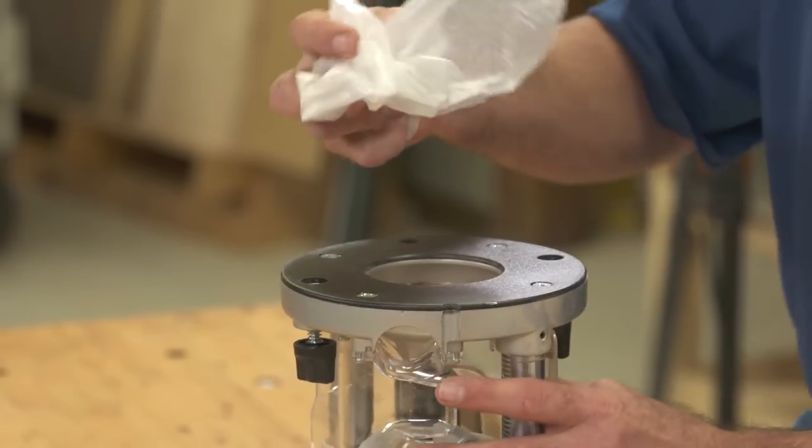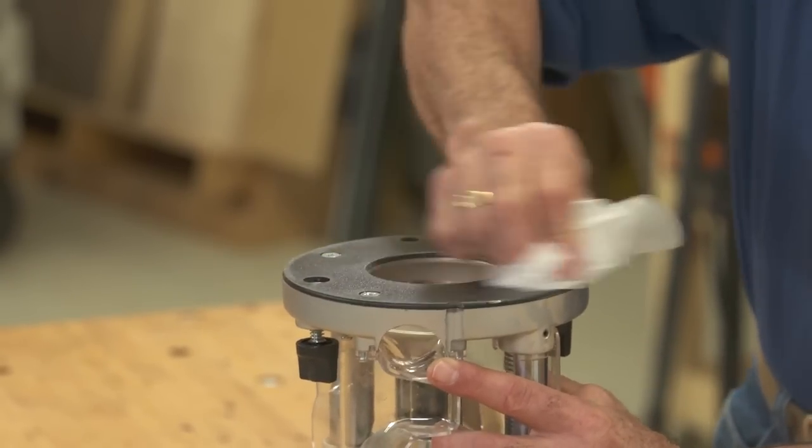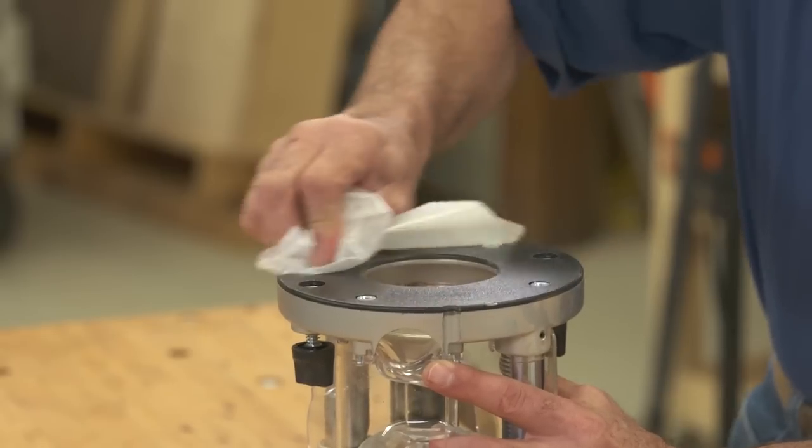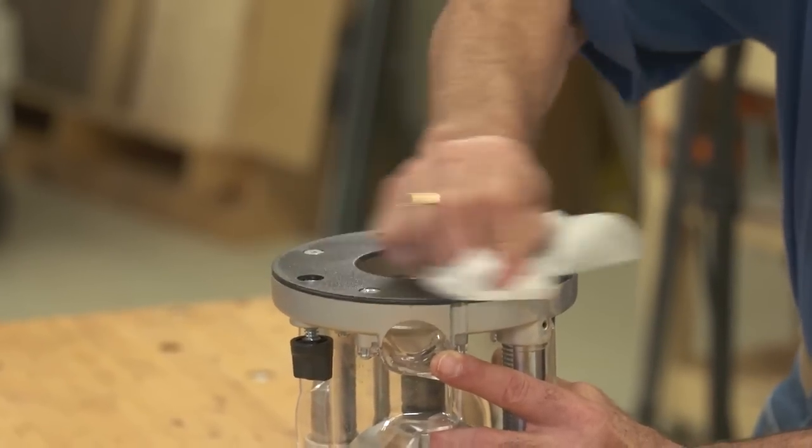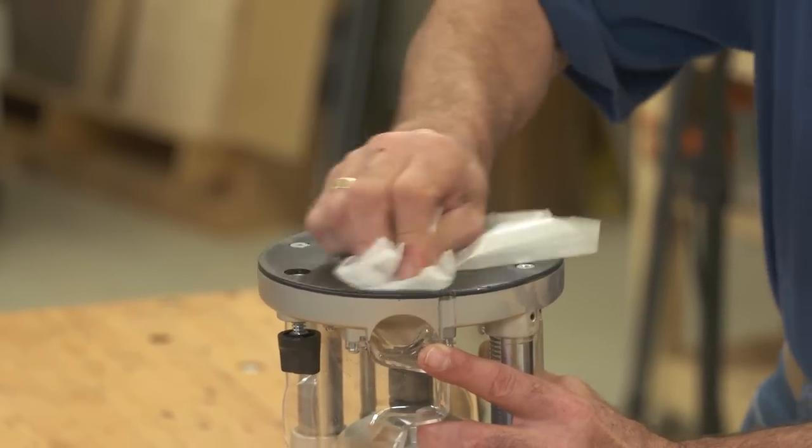So if you take that and you kind of ball it up and you run it across the surface like that, we're migrating a little bit of the wax from the surface down onto the router base.